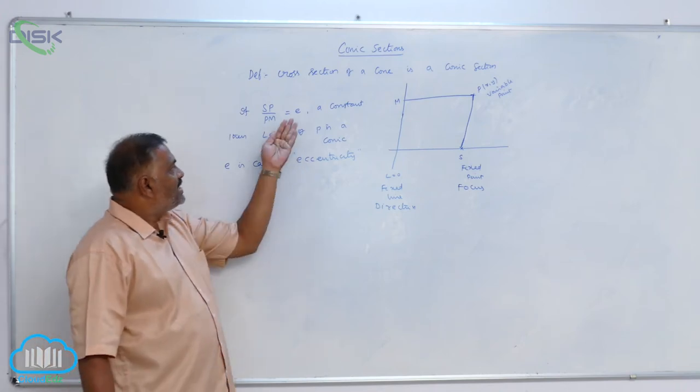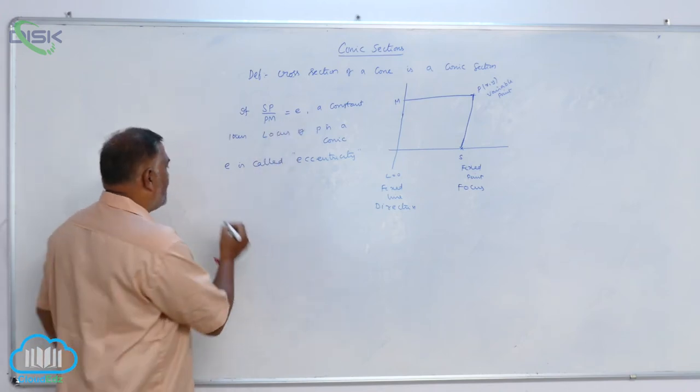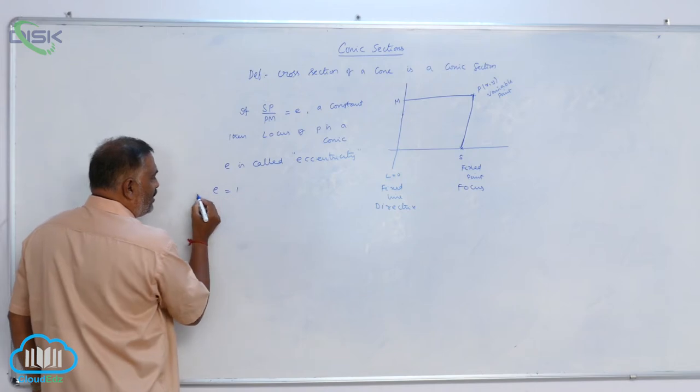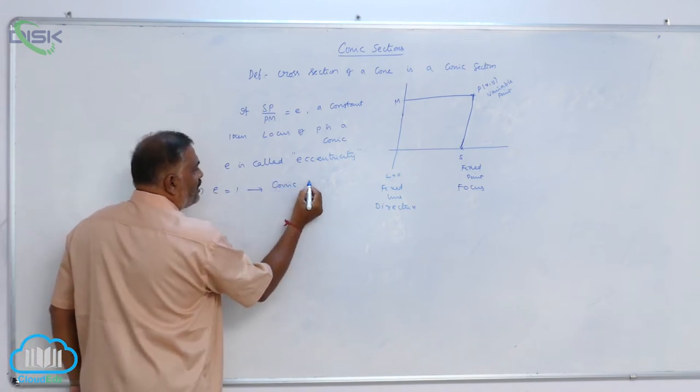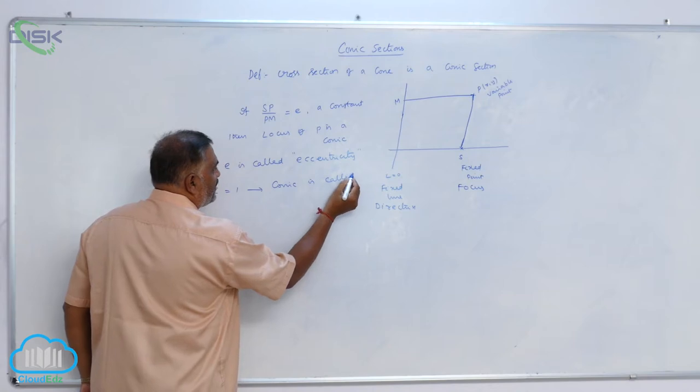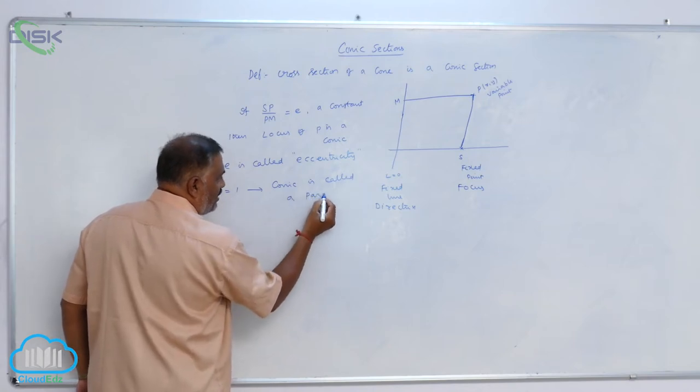Now, it depends upon the value of E. If E is equal to 1, then conic is called a parabola.